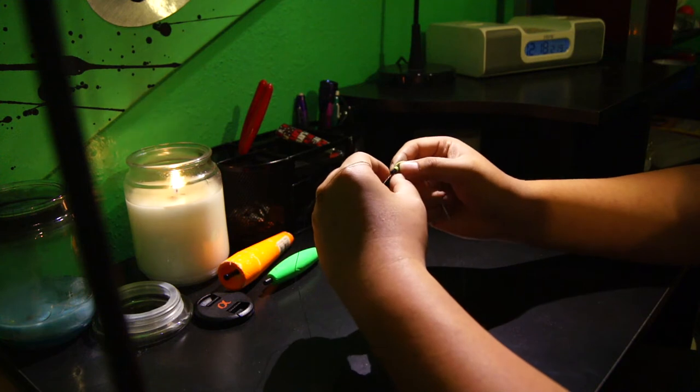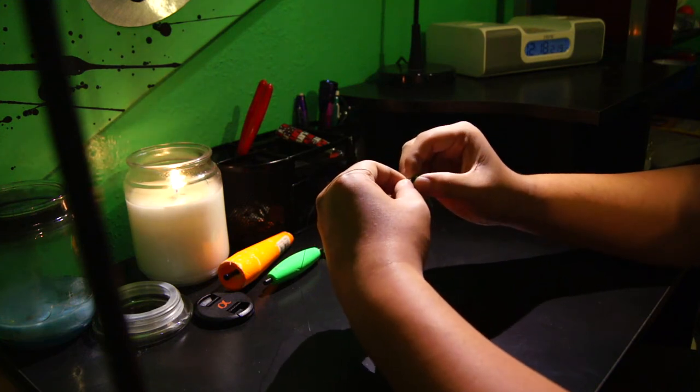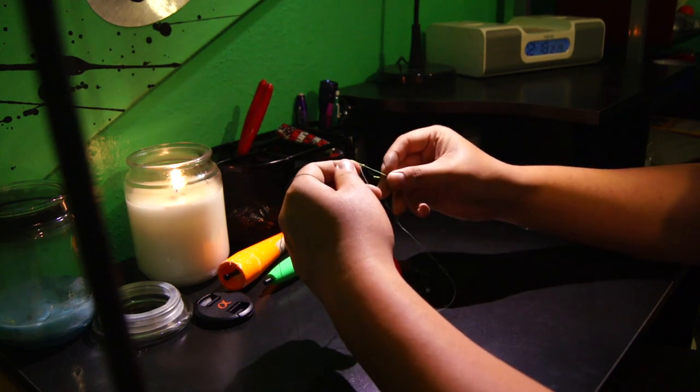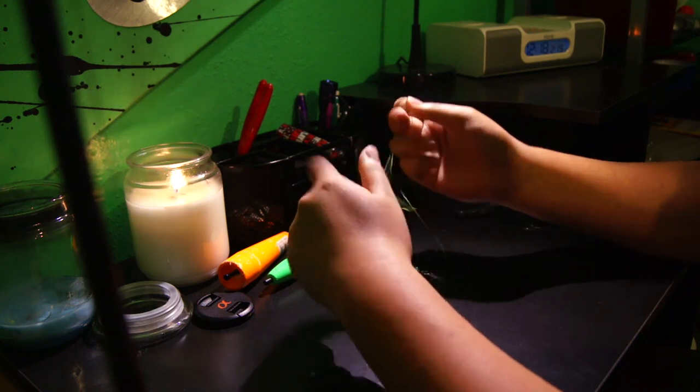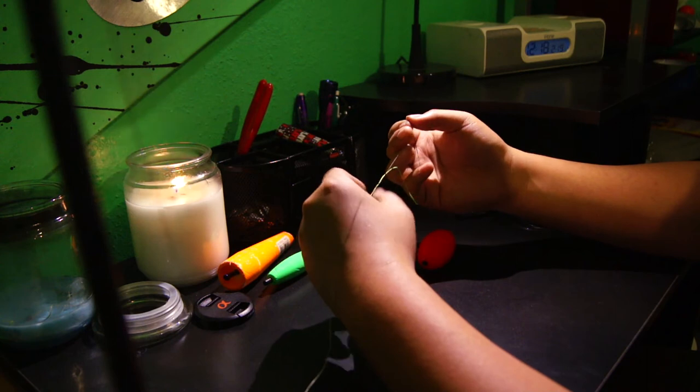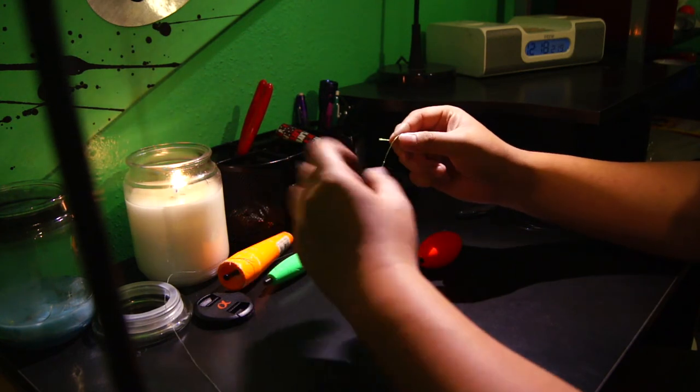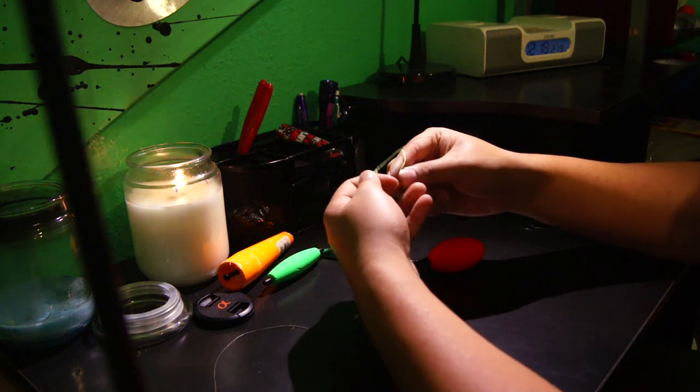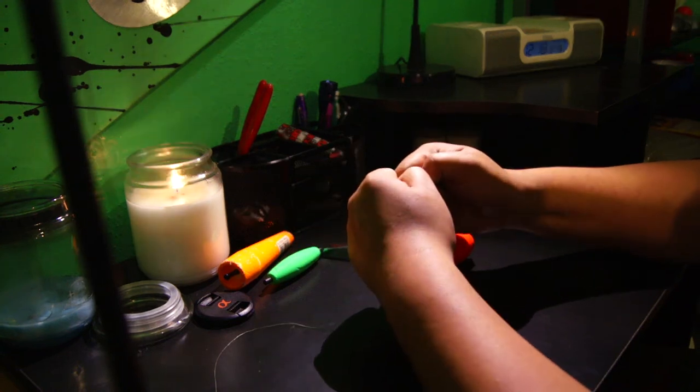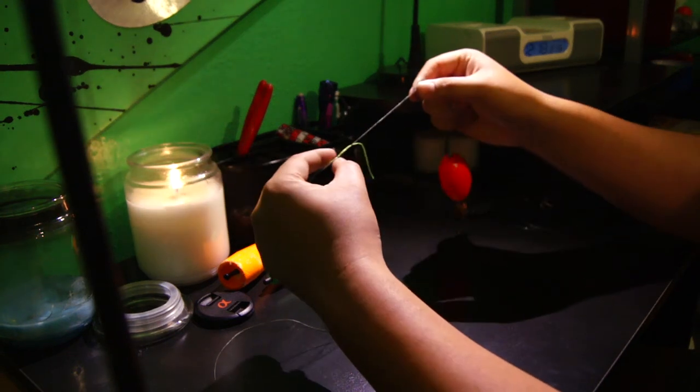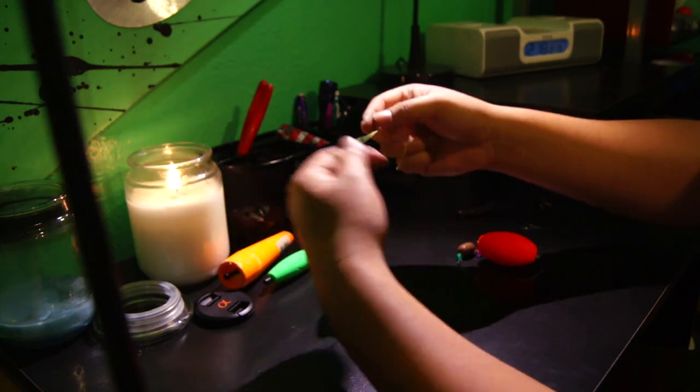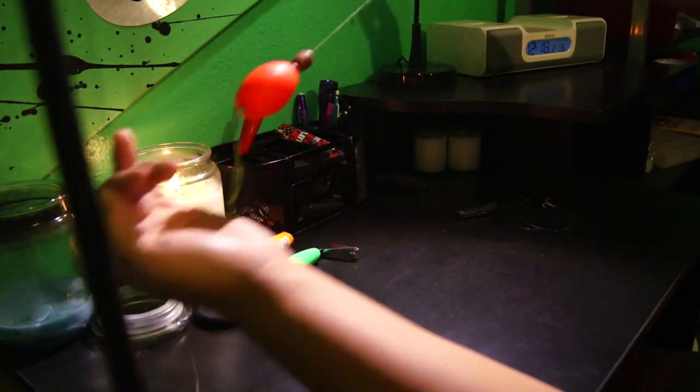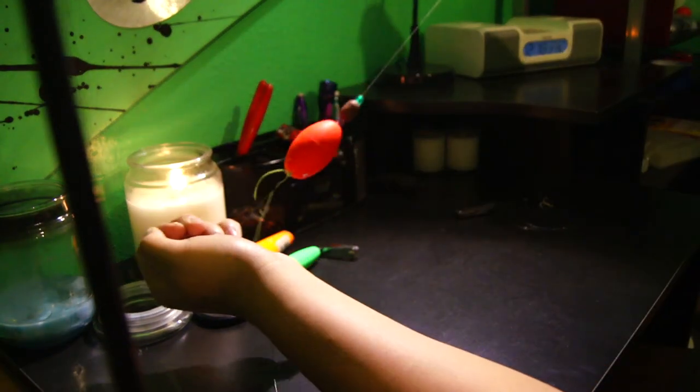To tie this slip cork bobber stop knot on, you just slide it off like that and it falls off. And you pull tight. Make sure that knot's really tight. Because if it's loose, it's just going to slide up and down and it's not going to work effectively. And then you pull tighter. Now you can slide it and adjust it to however deep you want to fish. And it'll stop the cork. It's probably about a foot deep. It's really nice to go after for live bait.